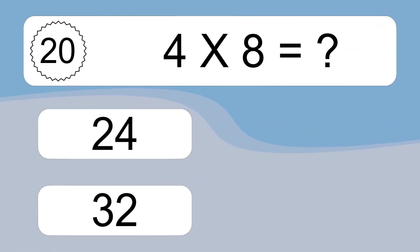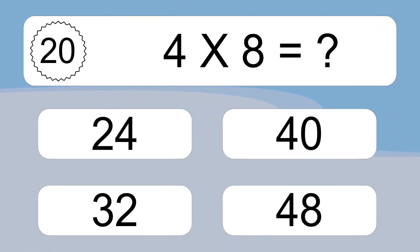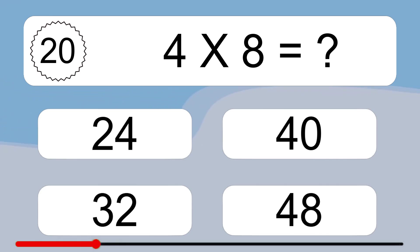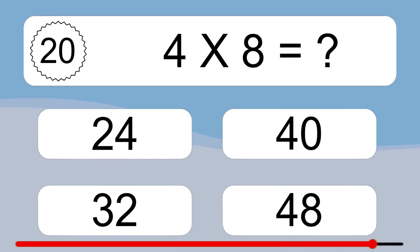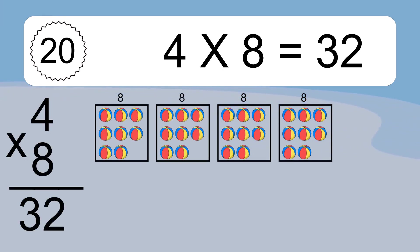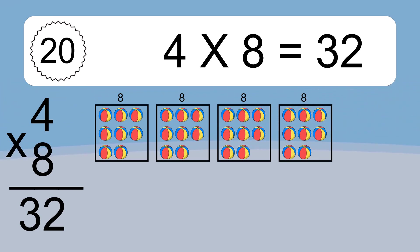4 times 8 equals what? 4 times 8 equals 32. We have 4 boxes, and each box has 8 colorful balls inside. If you count all the balls in all the boxes together, you will have 4 times 8 balls. This equals 32 balls.